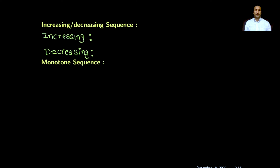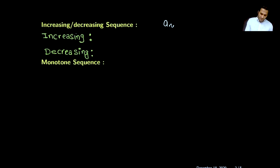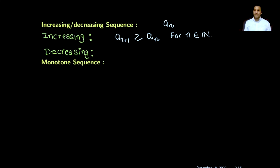My first definition is what is an increasing and decreasing sequence. A sequence is said to be an increasing sequence if the general term a_n satisfies the following inequality: a_{n+1} is greater than or equal to its previous term a_n, and this is true for all n belonging to the set of natural numbers. In other words, any two consecutive terms satisfy this inequality, meaning the terms of the sequence keep getting larger and larger.